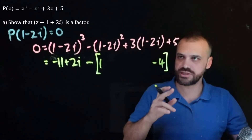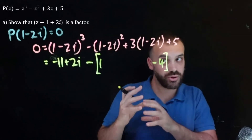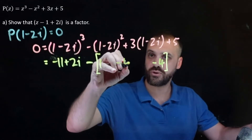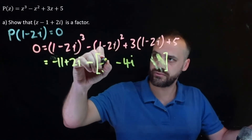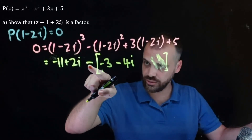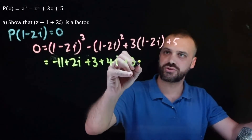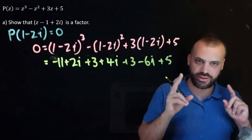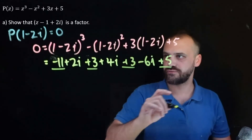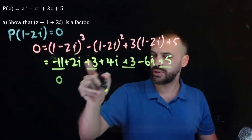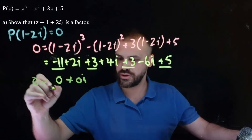And then 2 times 1 times negative 2i gives negative 4i. So 1 minus 4 is negative 3, giving negative 3 minus 4i. But we're subtracting all of it, so it becomes positive 3 and positive 4i. We have 3 times 1 which is 3, and 3 times negative 2i which is negative 6i, and we have that 5. Looking at all real components: negative 11 plus 3 plus 3 plus 5 equals 0. Imaginary components: 2i plus 4i minus 6i equals 0i. Zero plus 0i is 0.